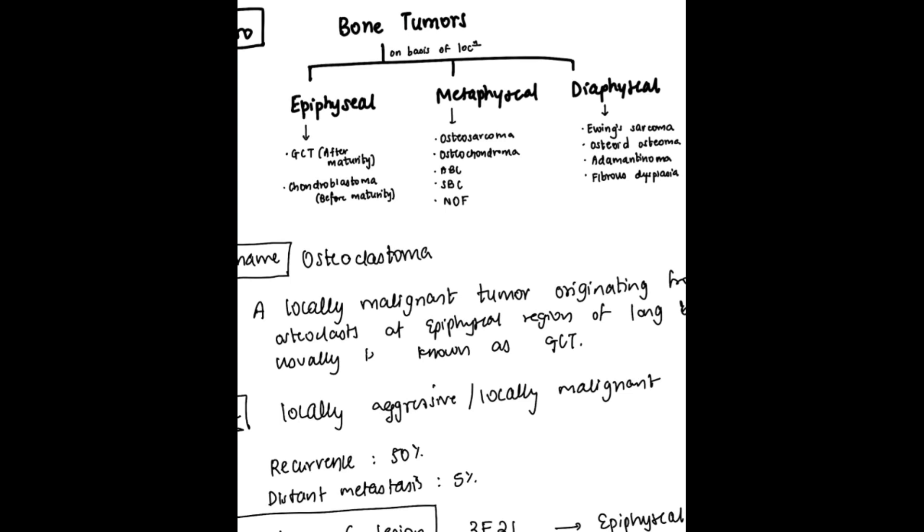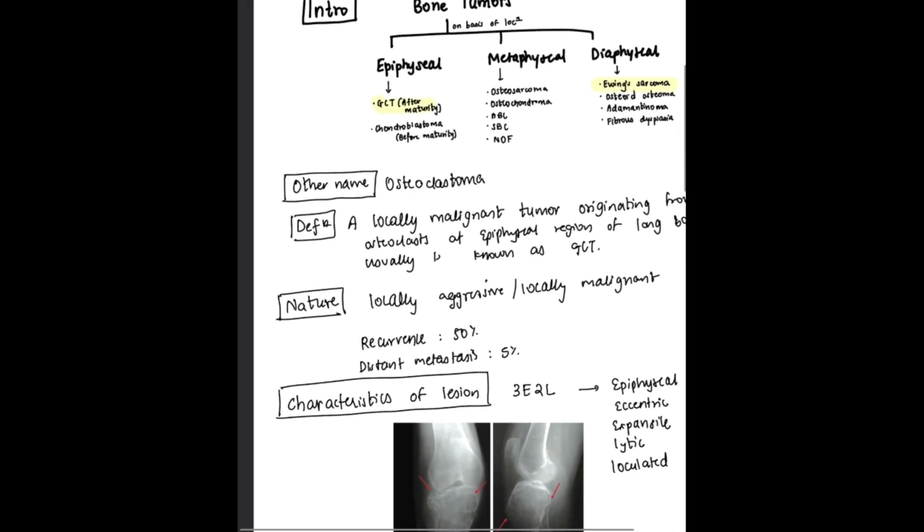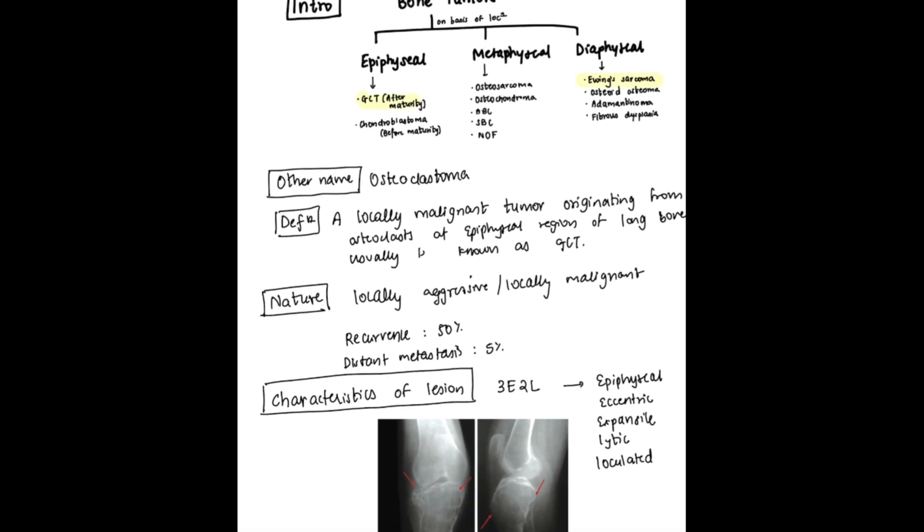Diaphyseal tumors include Ewing sarcoma, osteoid osteoma, adamantinoma, and fibrous dysplasia. Out of this, giant cell tumor and Ewing sarcoma are very, very important. So continuing further with giant cell tumor, what is the other name of giant cell tumor?